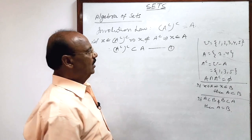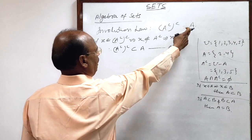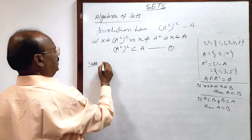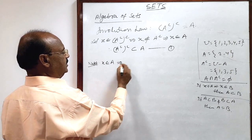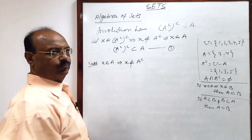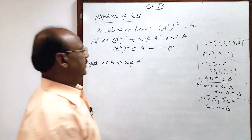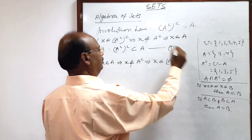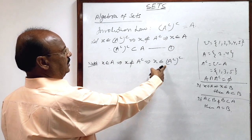Now conversely, we will show that the RHS is a subset of the LHS. We take an arbitrary element of set A. If x is an element of set A, this implies x is not an element of A complement. And if x is not an element of A complement, this implies that x belongs to the complement of A complement.